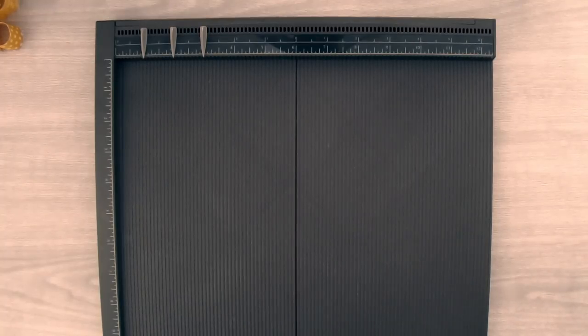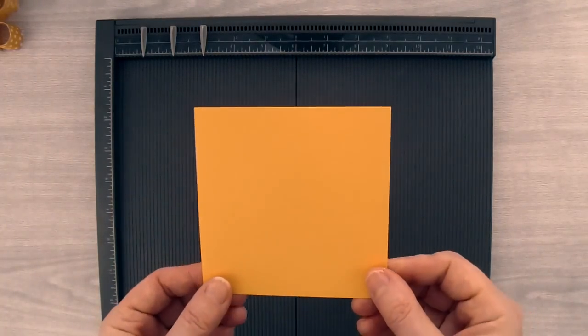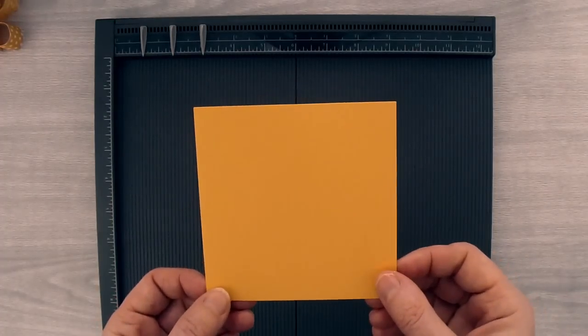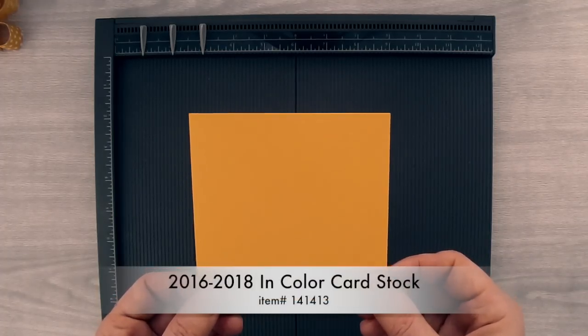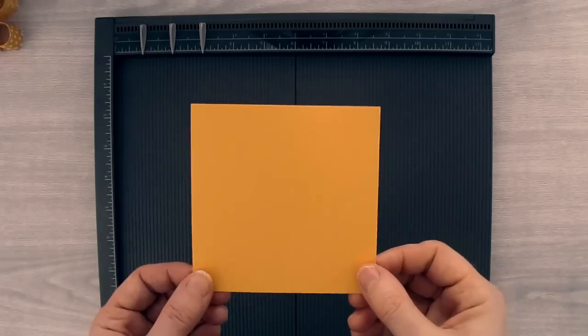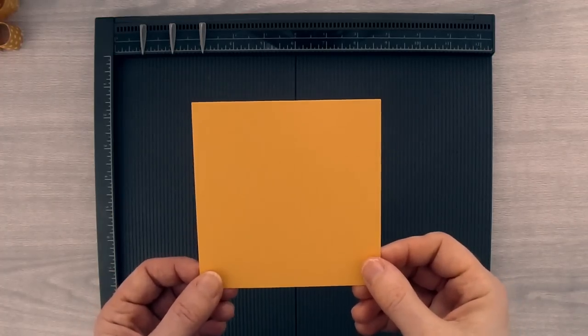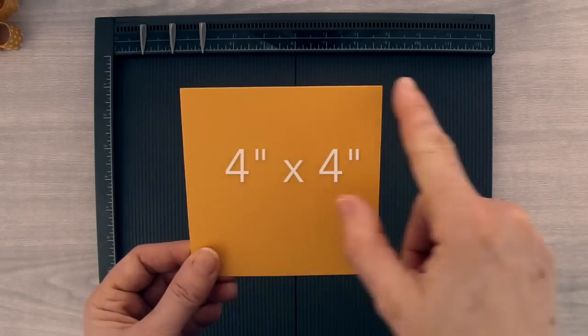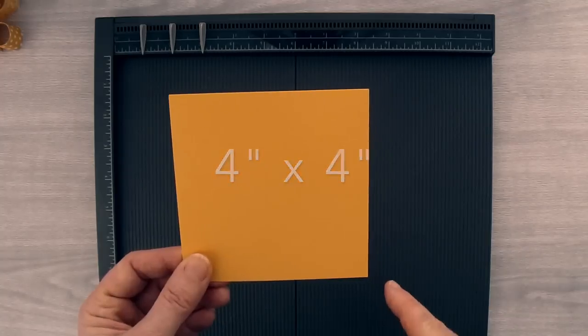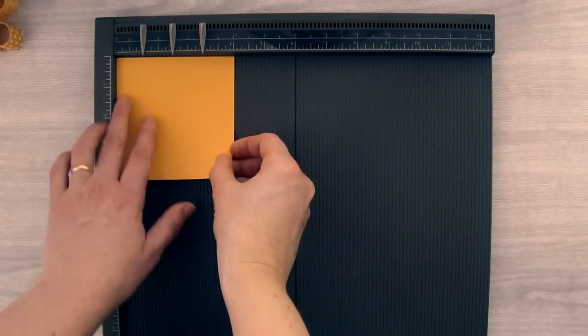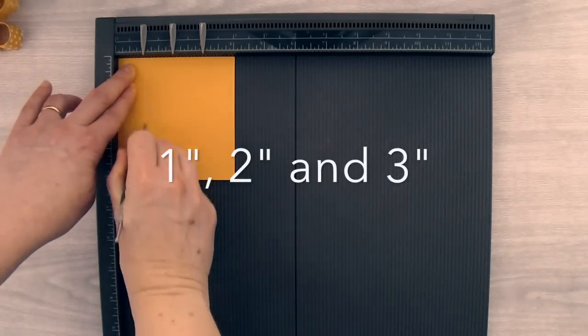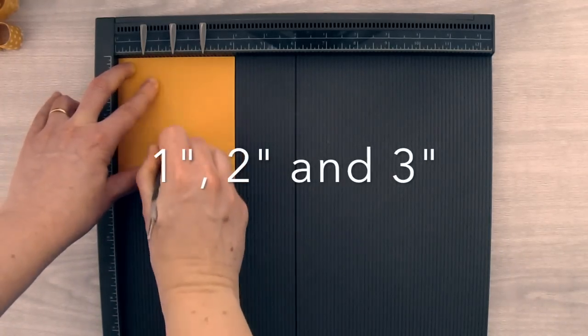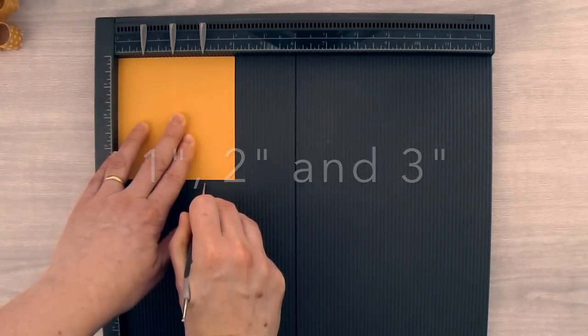Now we're going to make the filler strips for the butterfly, and for that you're going to need a matching piece of cardstock. I've taken a piece of Peekaboo Peach out of my 2016-2018 In Color cardstock pack. You can also buy the cardstock colors in individual packs. I've cut this piece to 4 inches by 4 inches, and I'm going to put one of the sides at the top of my scoring board. We're going to score at the 1 inch mark, the 2 inch mark, and the 3 inch mark.